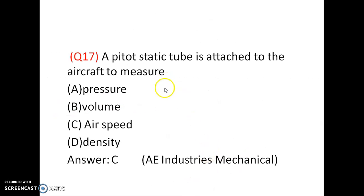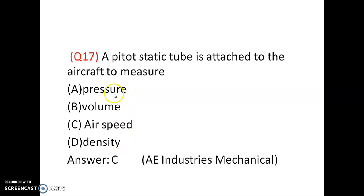A Pitot static tube is attached to the aircraft to measure pressure, volume, air speed, or density. A Pitot static tube is used in aircraft to measure the air speed. So, option is C.